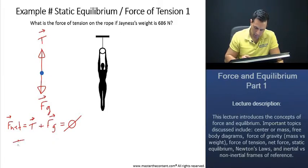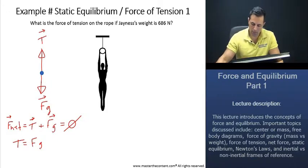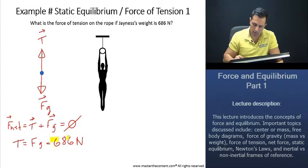Thus, tension is just going to be your force of gravity, or otherwise known as J's weight, and that's going to be 686 newtons as it was given to us.